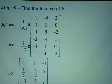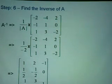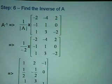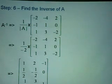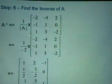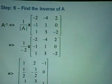So from here, we will get: negative half times negative two equals one, negative half times negative four equals two, negative half times two equals negative one, negative half times negative one equals a half, and so on. So this is the inverse of A.